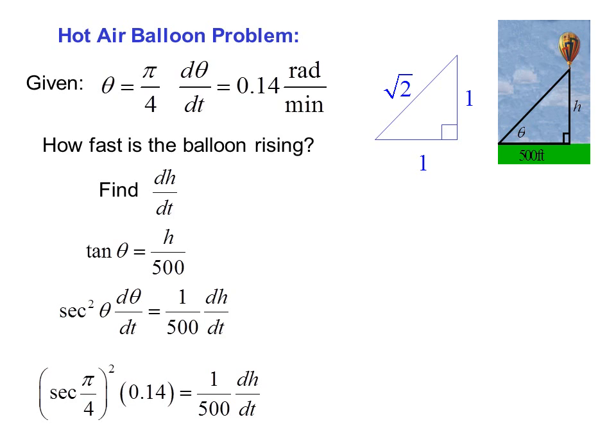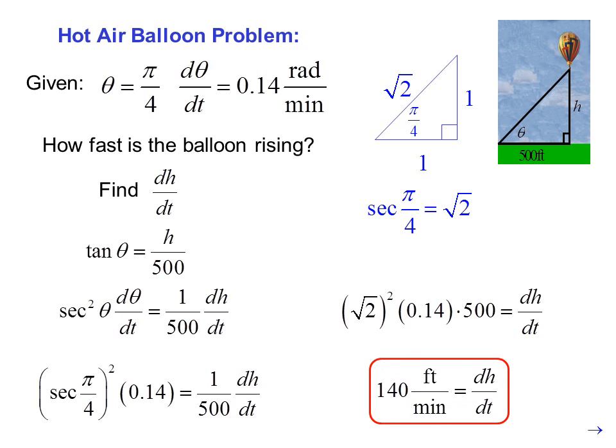Then substituting in pi over 4 for theta and 0.14 for d theta/dt. Now we have to figure out what secant of pi over 4 is. Looking at our 45 degree triangle, at pi over 4, secant is 1 over cosine, or radical 2. So we have radical 2 squared times 0.14 times 500 equals dh/dt, or 140 feet per minute equals dh/dt. So the balloon is rising at a rate of 140 feet per minute at that instant.